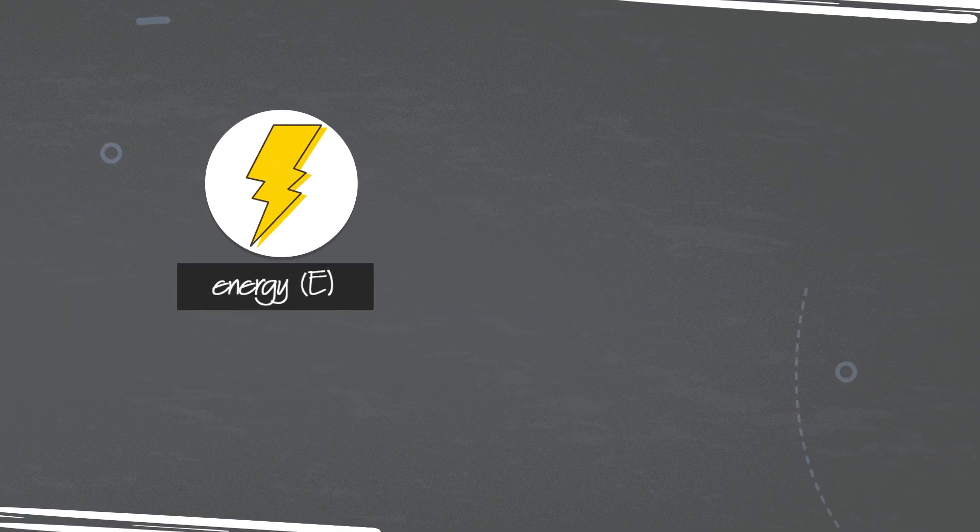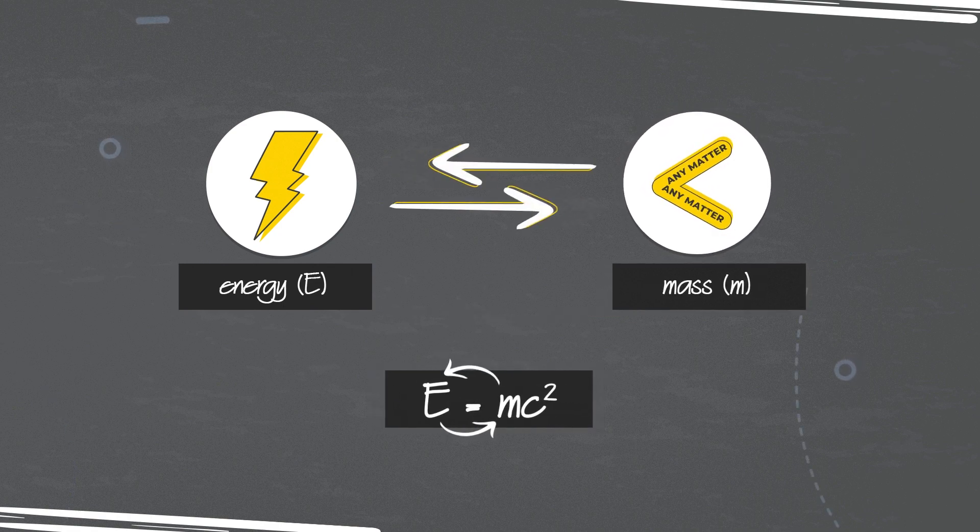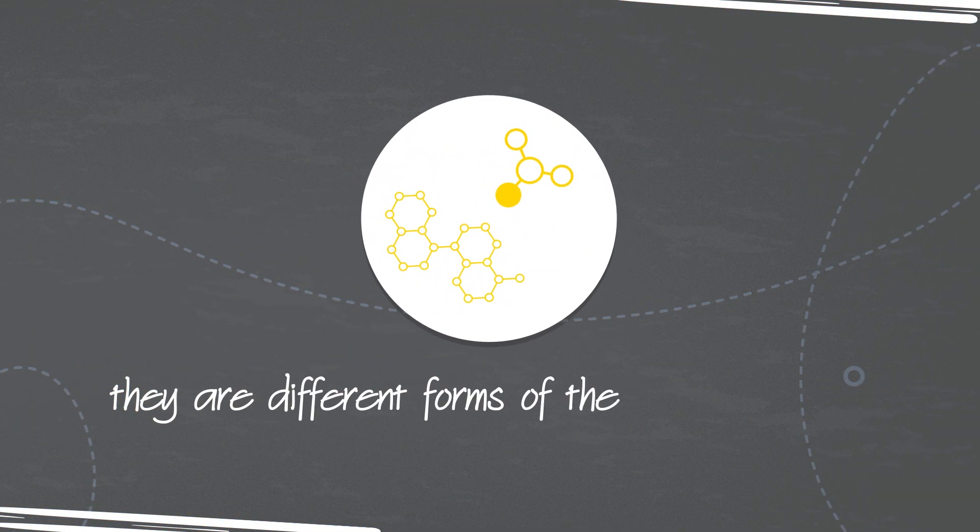It shows that energy, E, and mass, m, are interchangeable. They are different forms of the same thing.